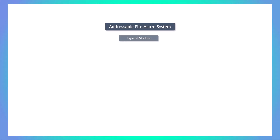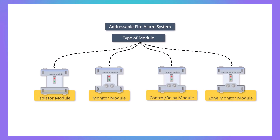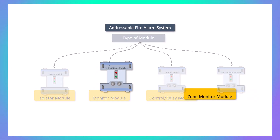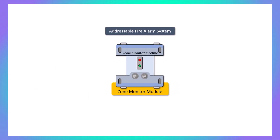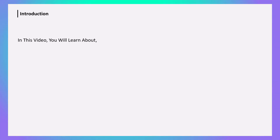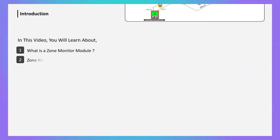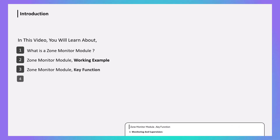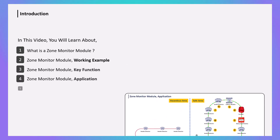Welcome to my YouTube channel. In addressable fire alarms, various modules are used such as isolator module, monitor module, control module, and zone monitor module. In today's video we will learn about the zone monitor: its working, applications, and see an example along with the wiring diagram connection.